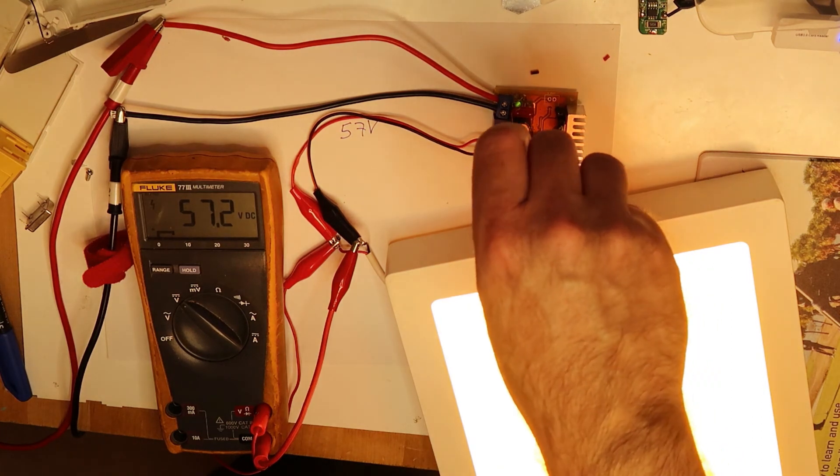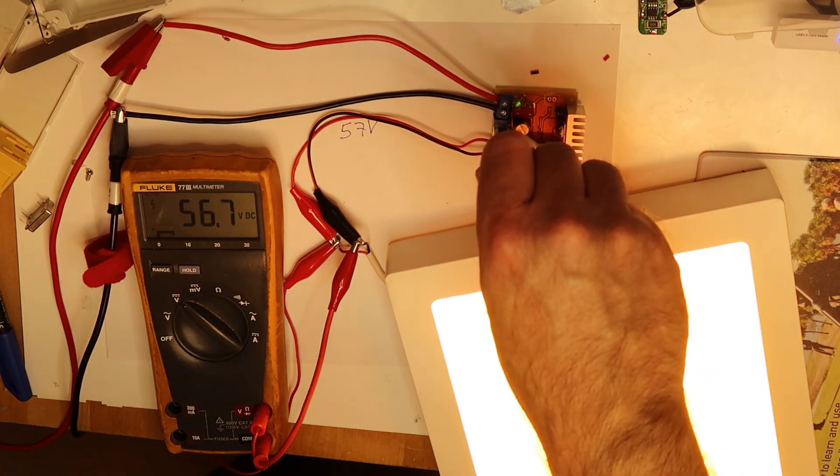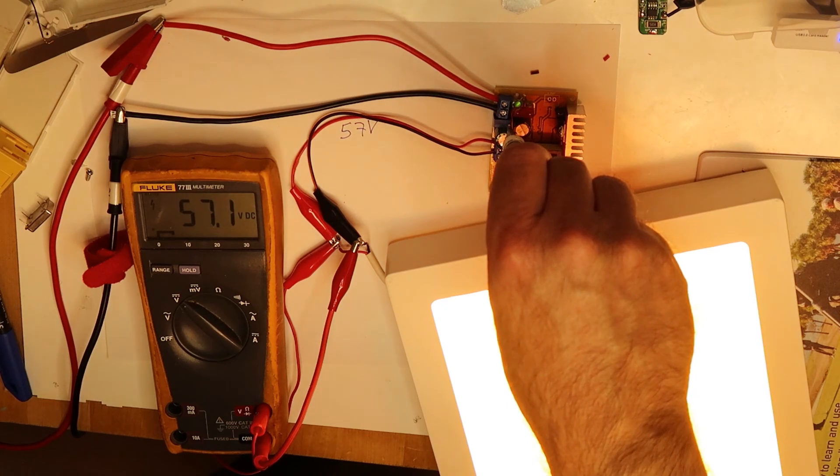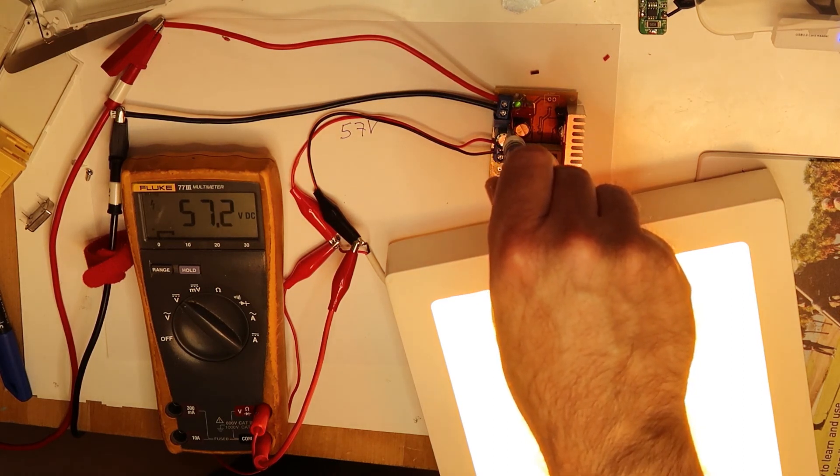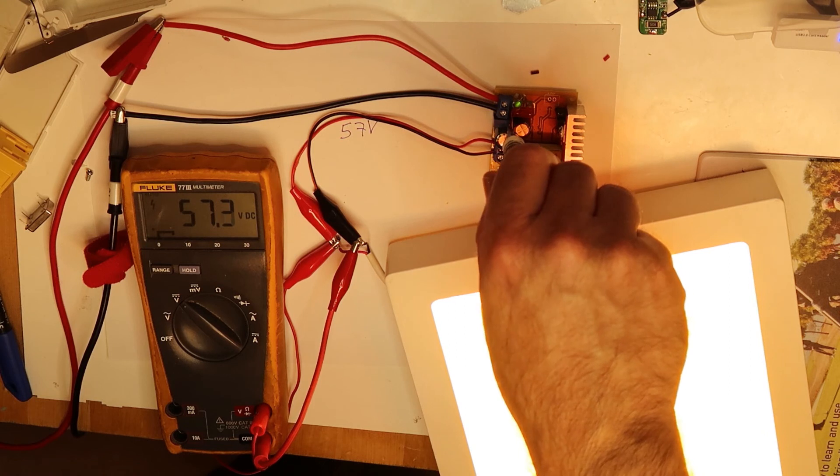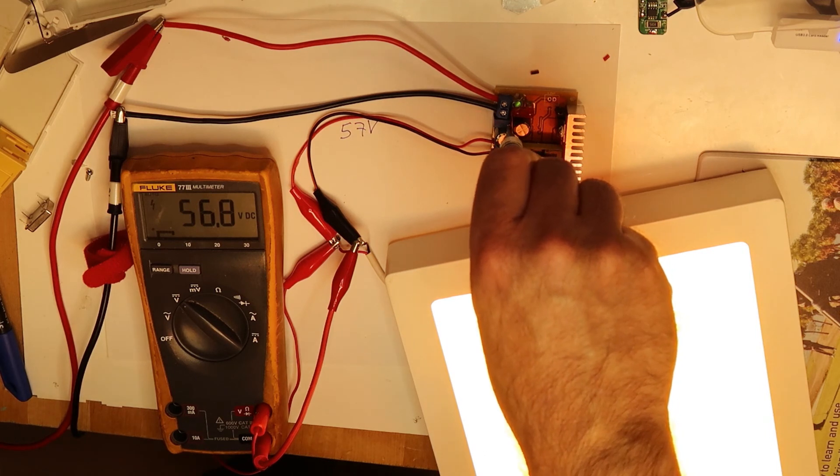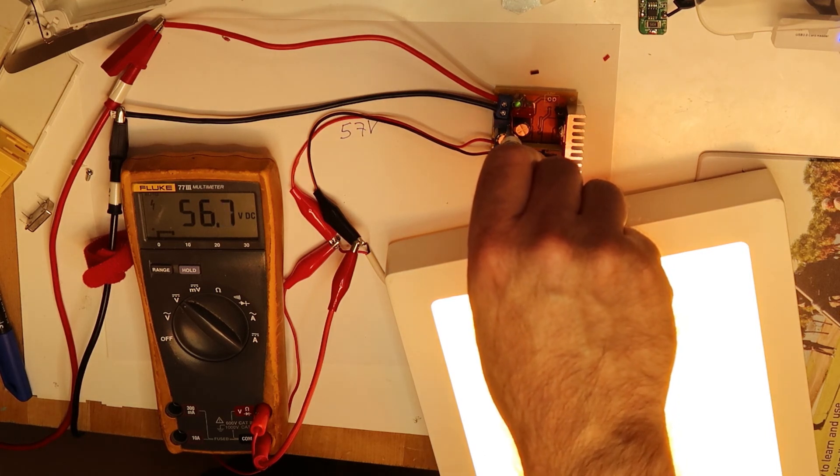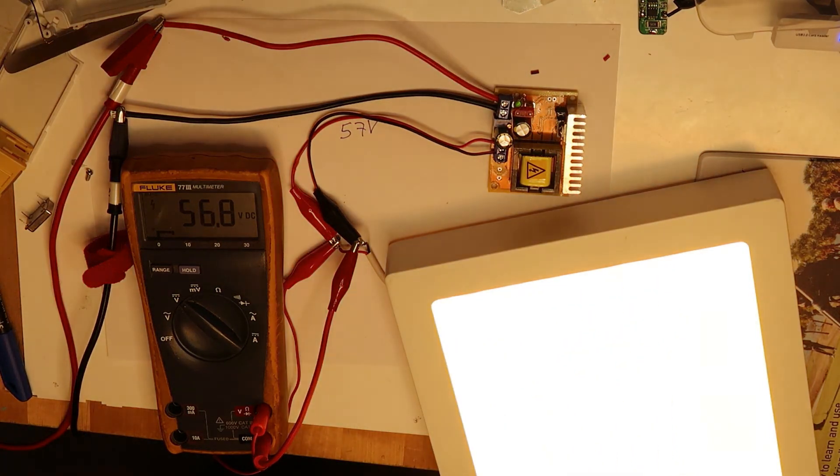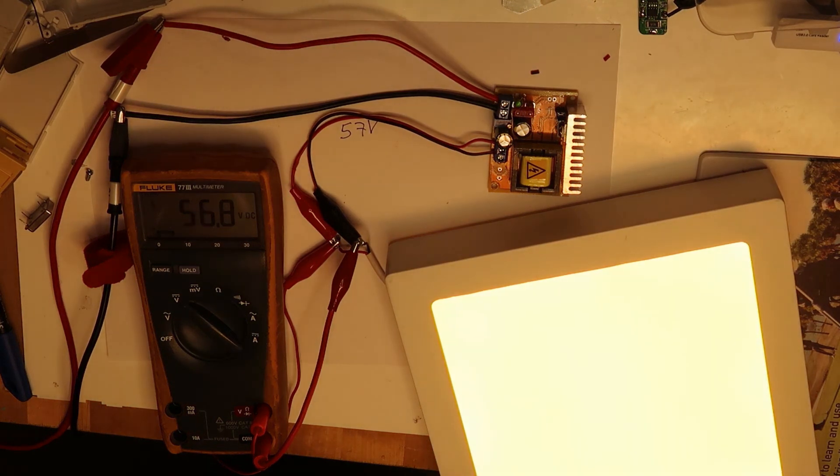But let's reduce again the voltage a little. You can see it is dramatically changing the light of the LED because this is the point where the current increased dramatically. So 1.5 amps and this is how you can use it.